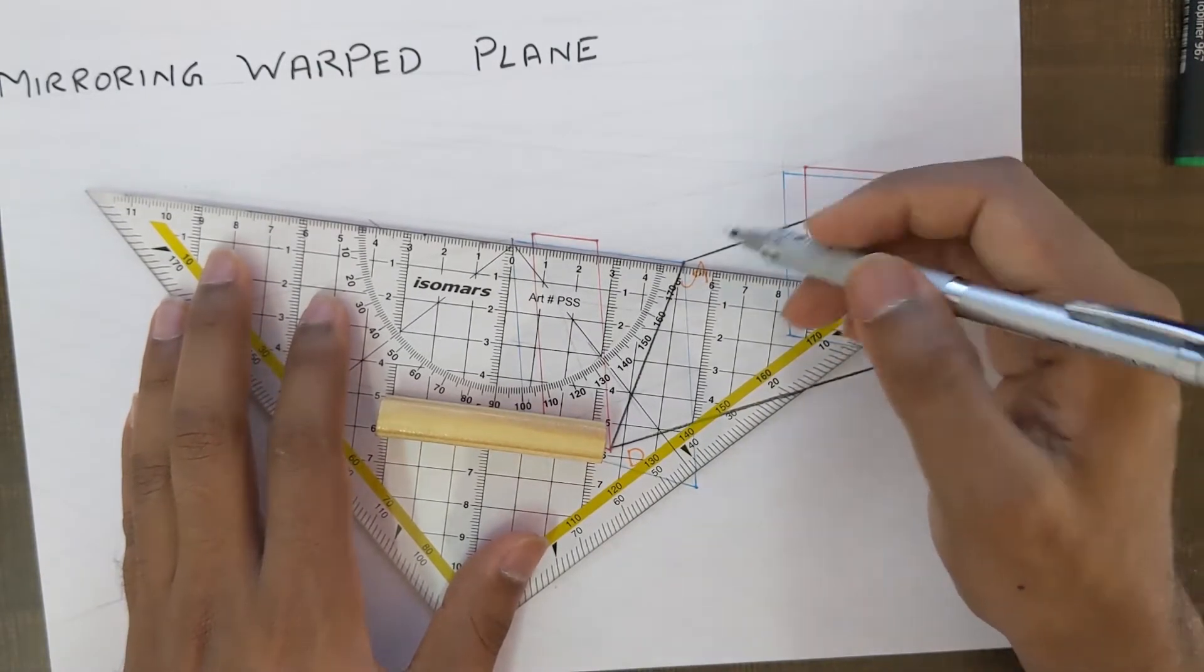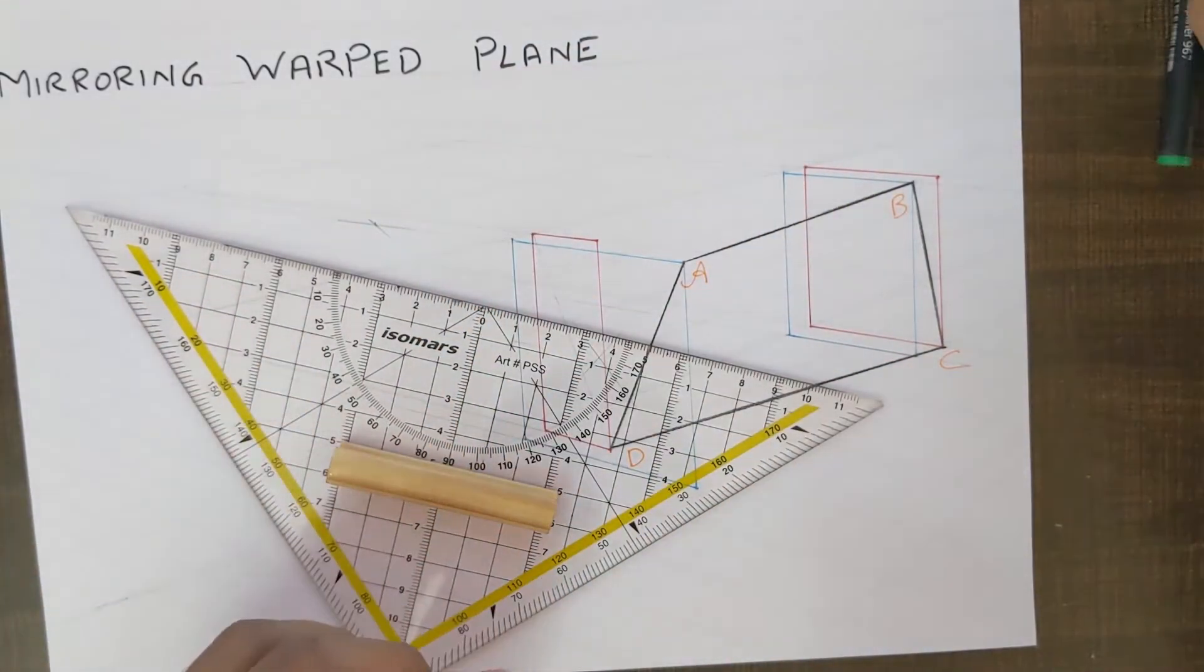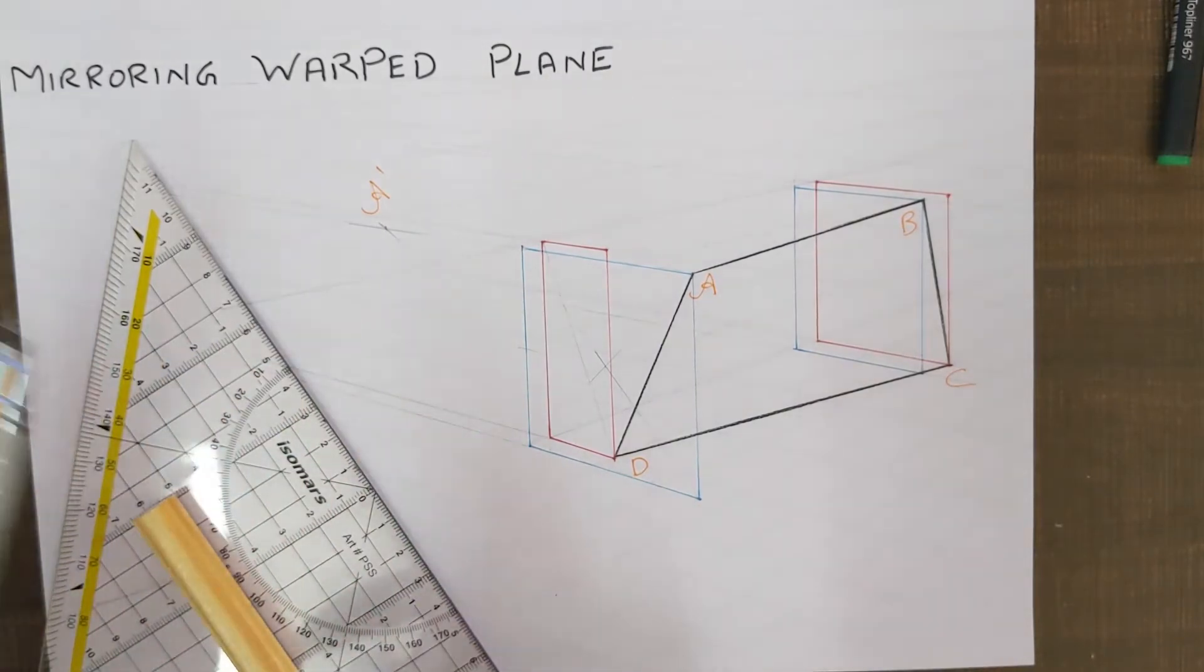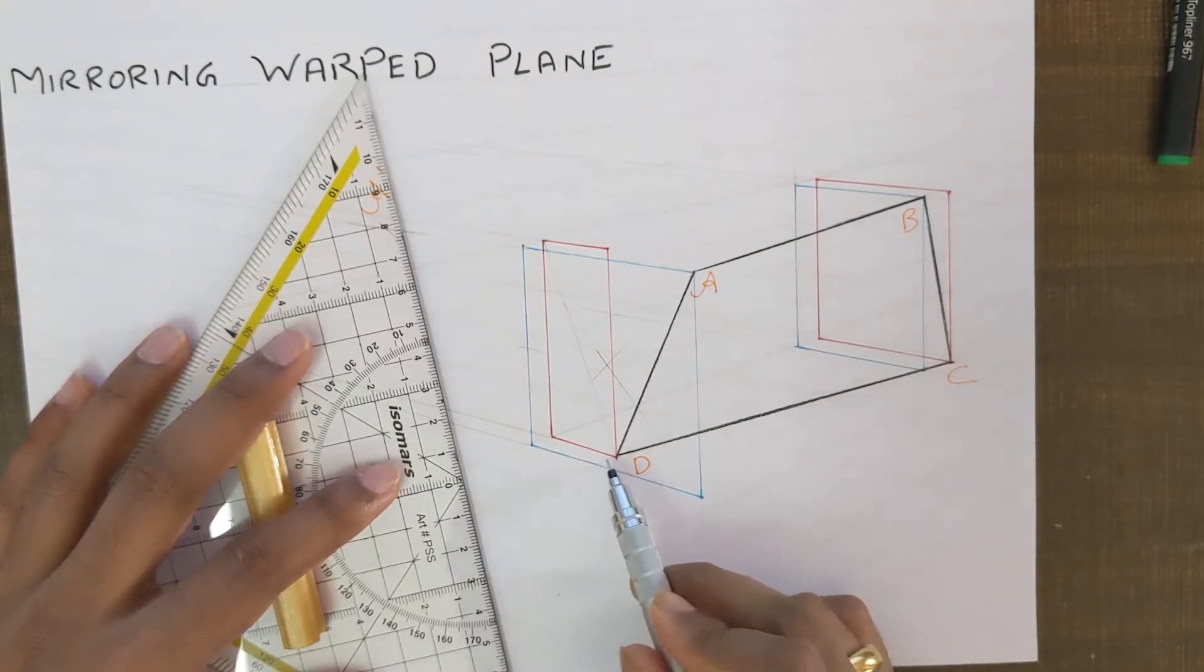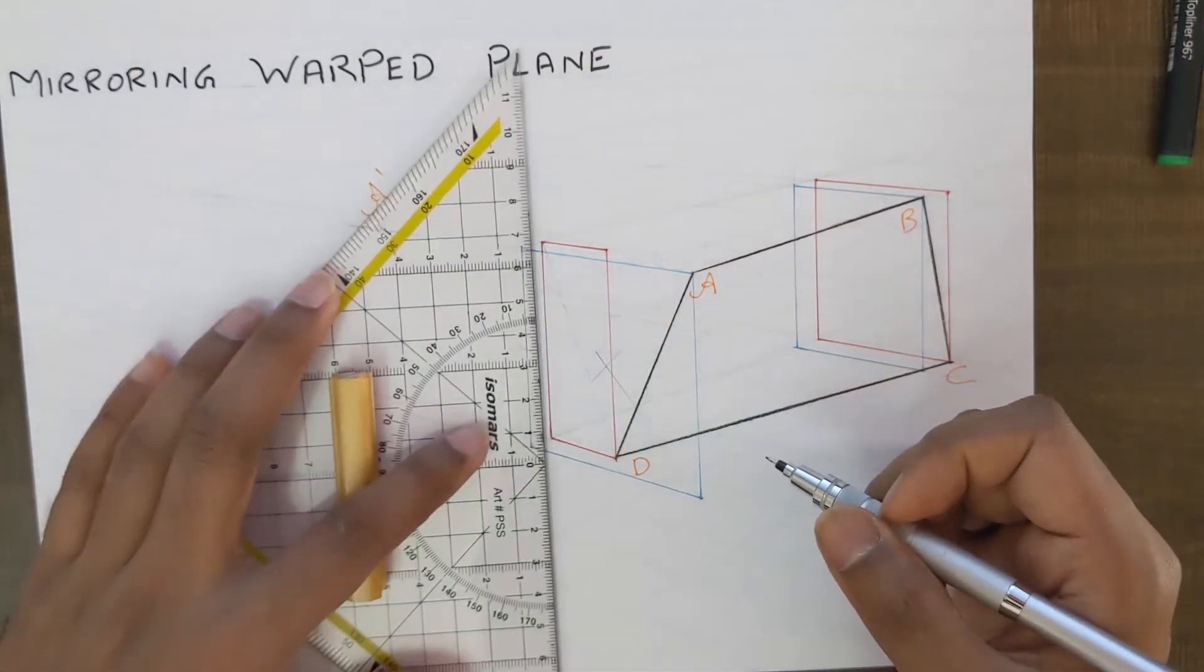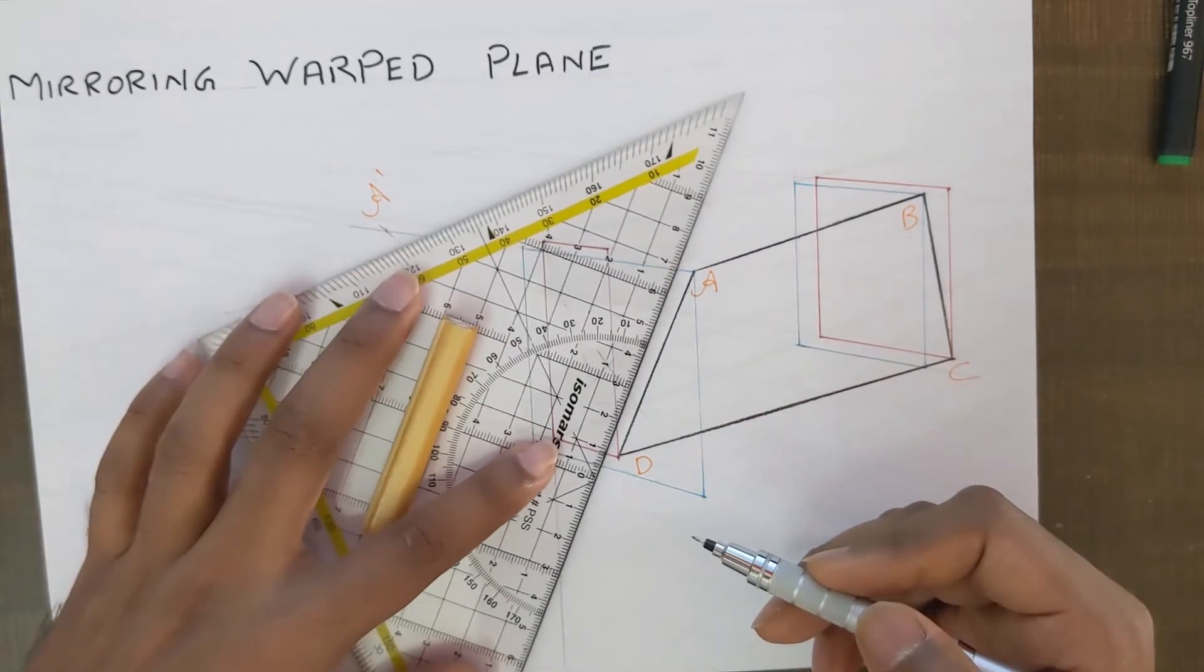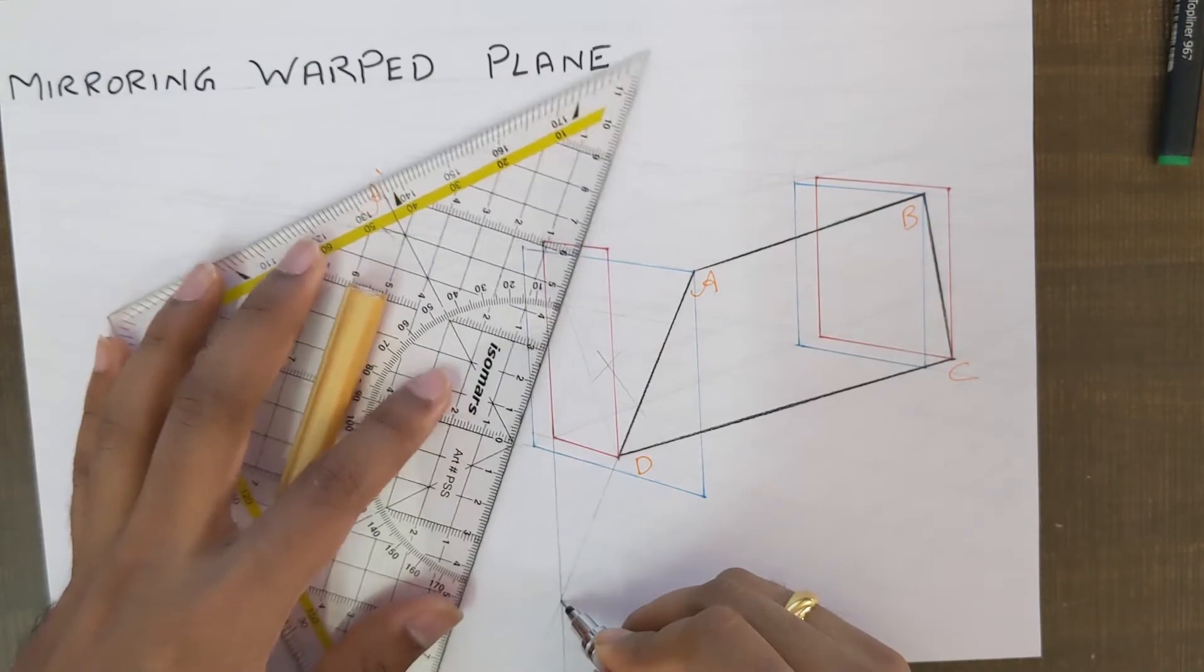Next we need to find the point D on the other side. So for that, just have a look at the point D. It is on this red color plane over here or red color rectangle. So I'll just extend the center line of the red color rectangle and I'll just extend this edge over here. So we'll get a new point over here.